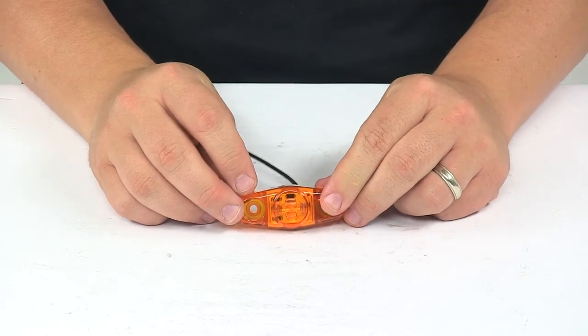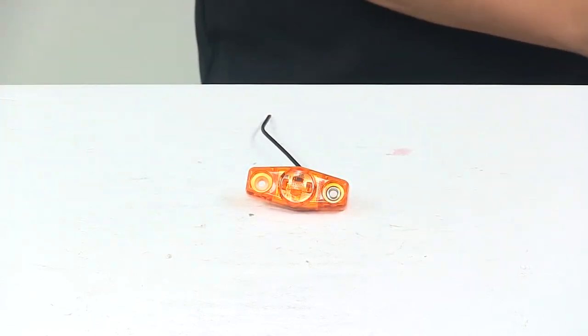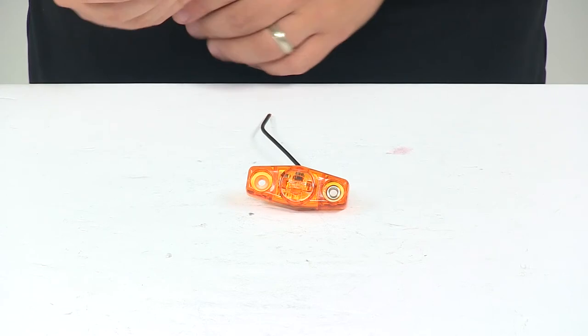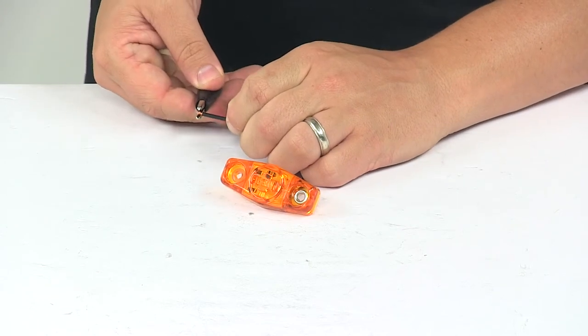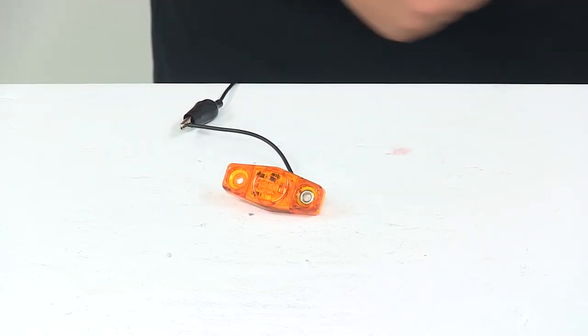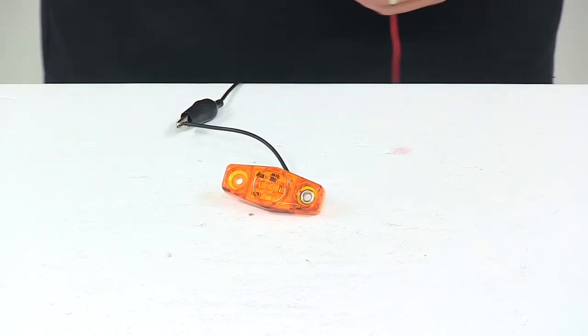We're going to go ahead and hook it up to power so you can see what it looks like with power running to it. We'll also be able to turn off our overhead light so you can see it in a low light setting.